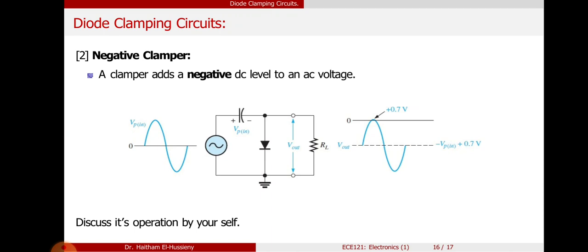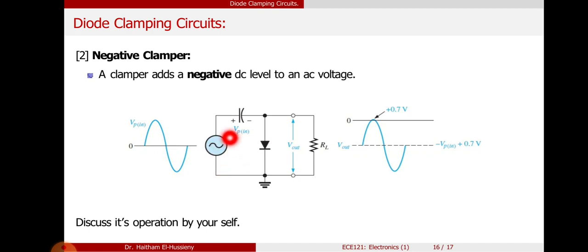In the case of the negative clamper, you can see here is a sinusoidal input voltage. Let it be Vp_in. Since it is a sine wave, its value is Vp_in sine omega t. That is the actual representation of the sine wave input.